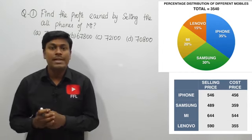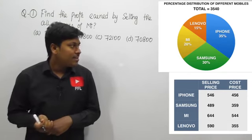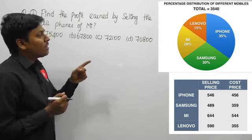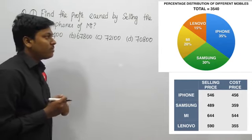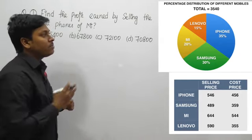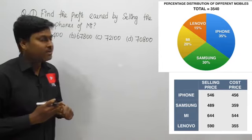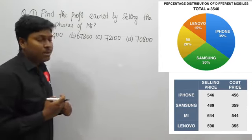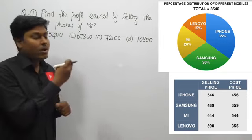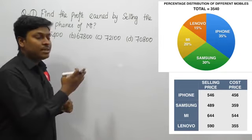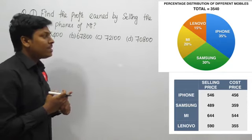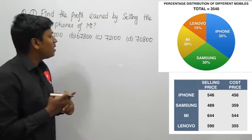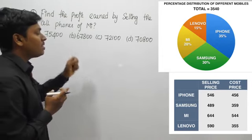Let me move on to DI number 13. Here they have given a pie chart and also a table chart. The pie chart talks about the percentage distribution of four different mobile phones — totally 3540 mobile phones. The table gives the selling price and cost price of each phone. Let me move on to the five different questions based on this chart.